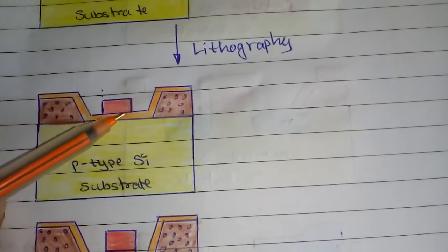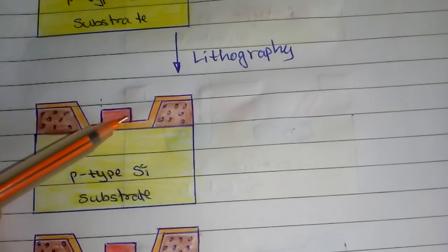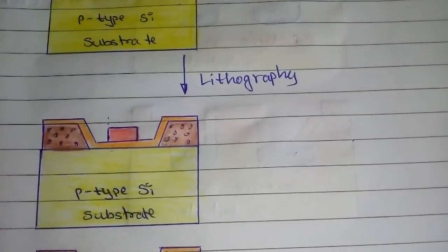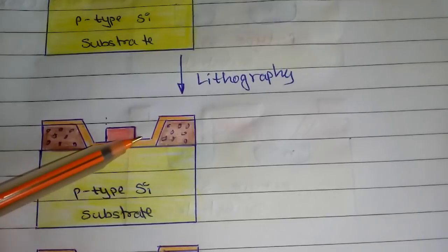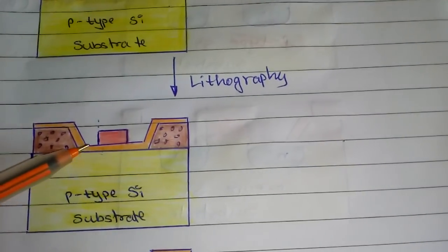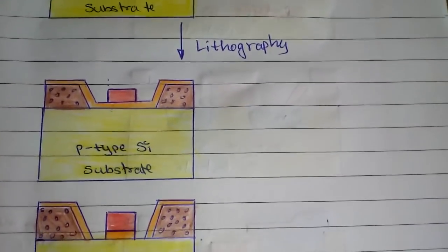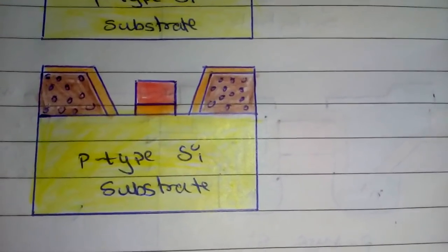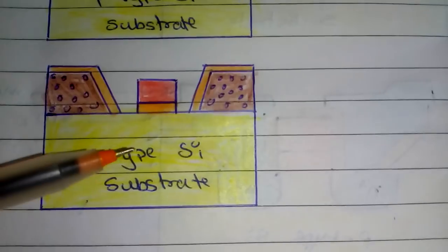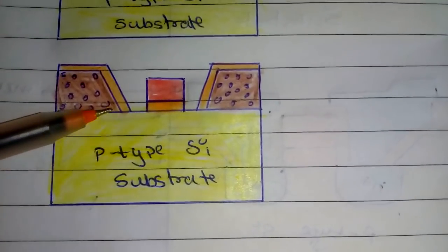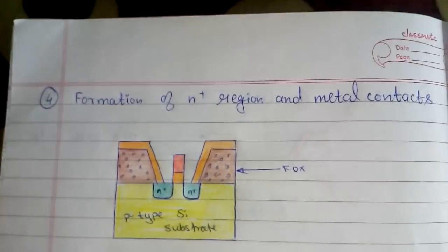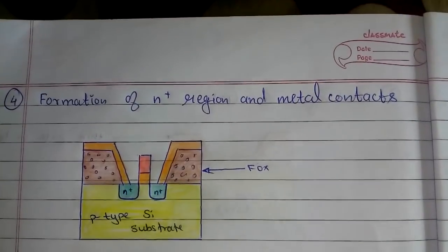Using lithography we remove the excess polysilicon, leaving only the gate region. We also remove the surrounding field oxide parts using lithography, leaving us with the gate structure. Since this is p-type substrate, there needs to be a well of n+ type. So we move on to the formation of n+ regions and metal contacts.